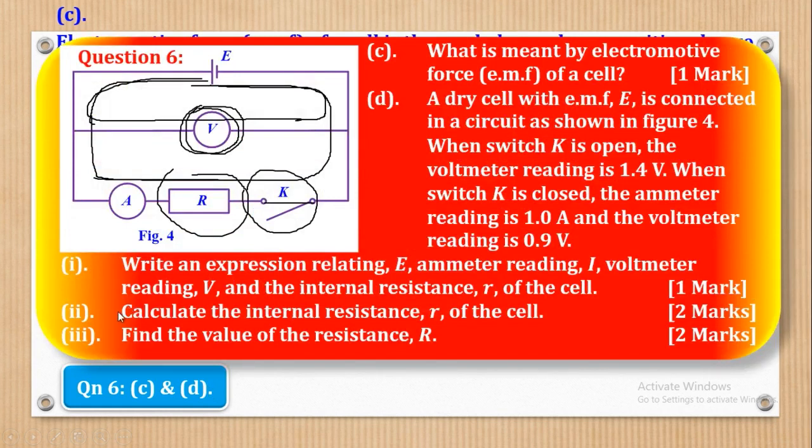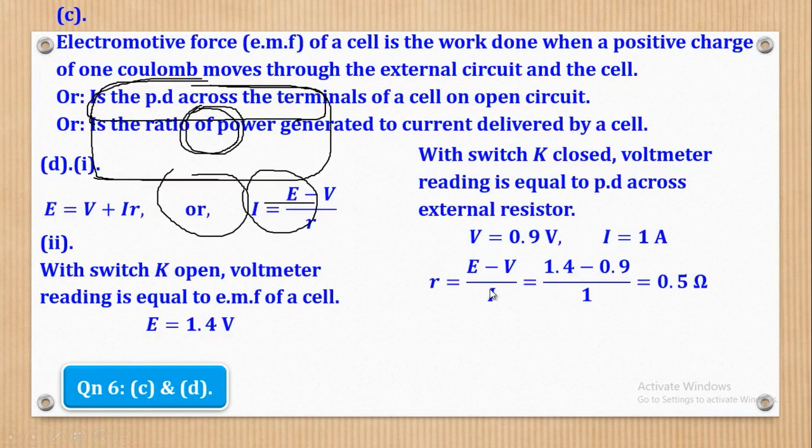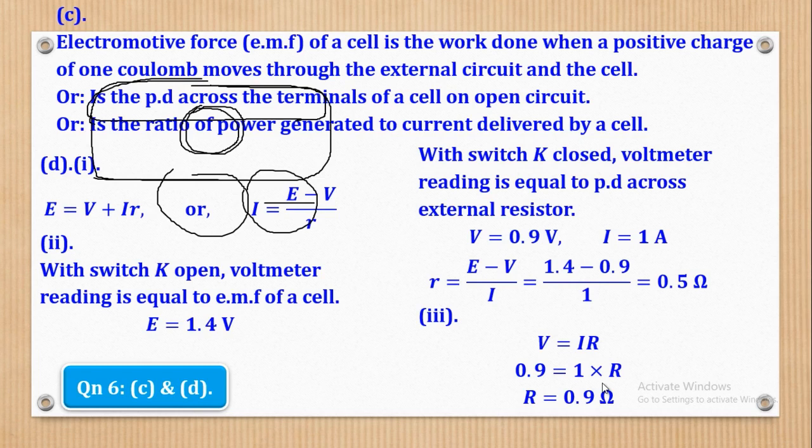So now we shall go to Roman 3. Roman 3 says, find the value of the resistance capital R. So we already know that V is equal to capital I capital R. Therefore shall just come and say, we shall just substitute where there is V, shall put there 0.9, and where there is I, shall put there 1, and remain with only one unknown, which is capital R. So when you do that, you come up with that. And when you make R the subject, you come up with capital R being equal to 0.9 ohms. So basically that's what they wanted.